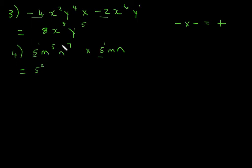And what do we do with m to the power 5 and m, also an invisible 1? We add them. That's m to the power 6. And this will give me n to the power, again invisible 1, n to the power 8. But we need to simplify. We cannot leave it as 5 squared. What is 5 squared? 5 squared is 25. So your answer will be 25m to the power 6n to the power 8.